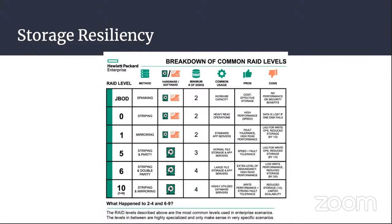RAID 1 is mirroring. Whatever is in one drive will be in another — an exact copy. You don't get the full length and breadth of all drives, but you do have redundancy. Should one of the two mirrors die, the other one has an exact replica.